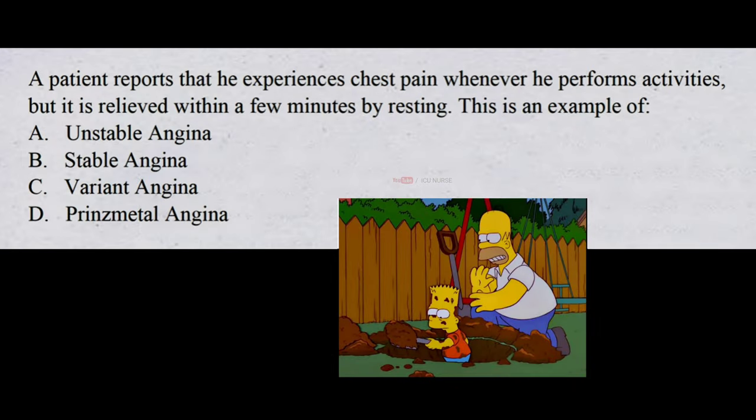A patient reports that he experiences chest pain whenever he performs activities, but it is relieved within a few minutes by resting. This is an example of: A. unstable angina, B. stable angina, C. variant angina, D. Prinzmetal angina. The correct answer is B, stable angina.